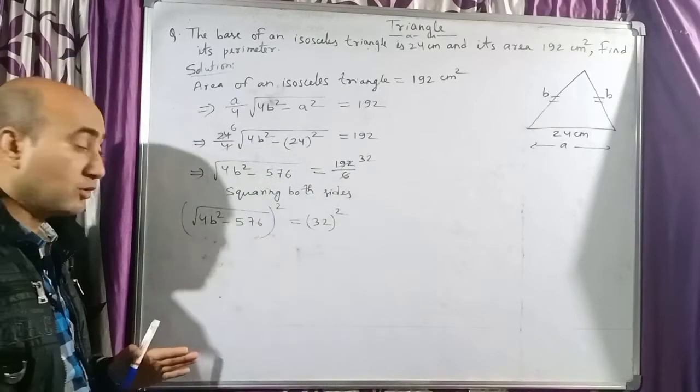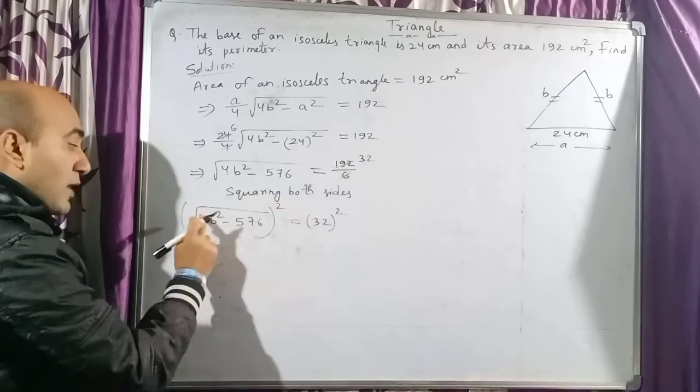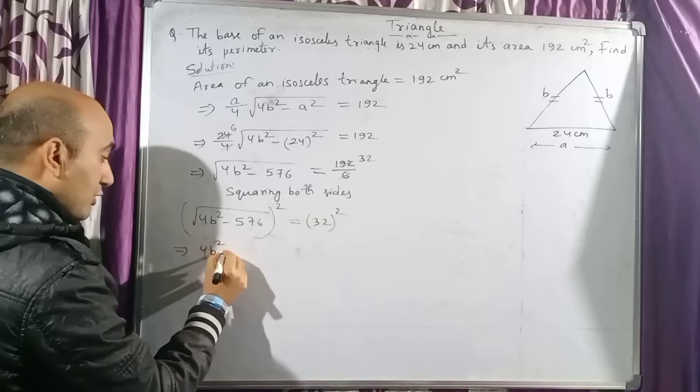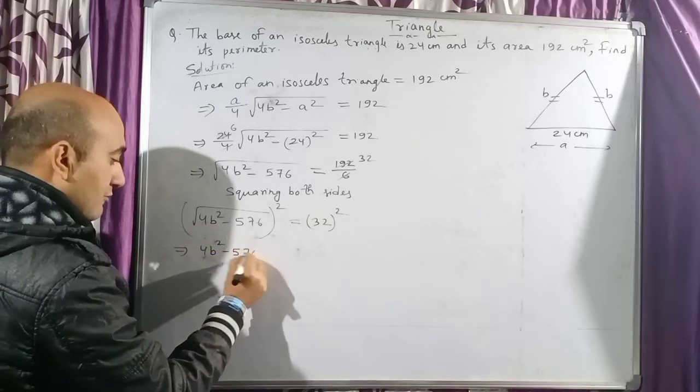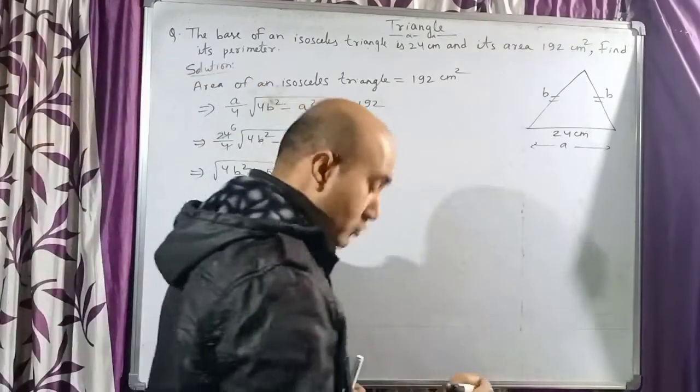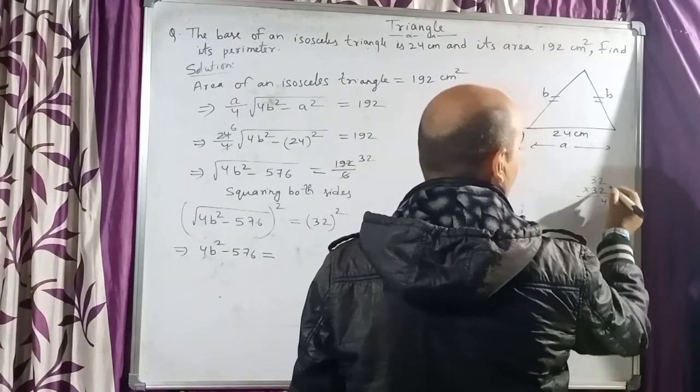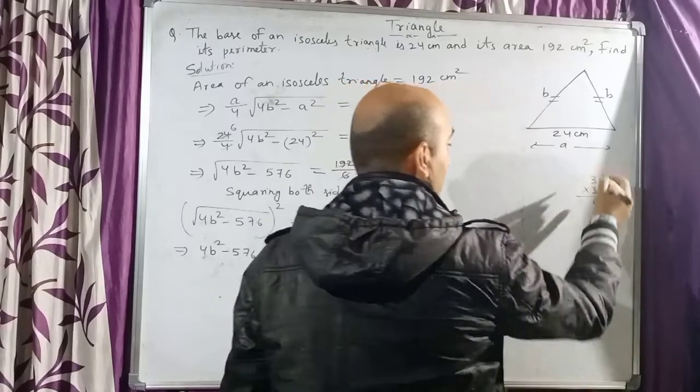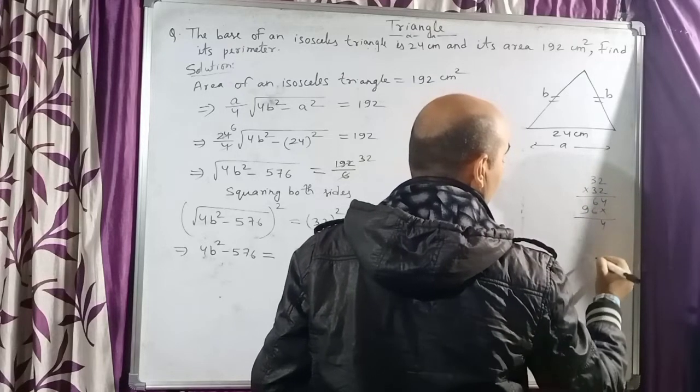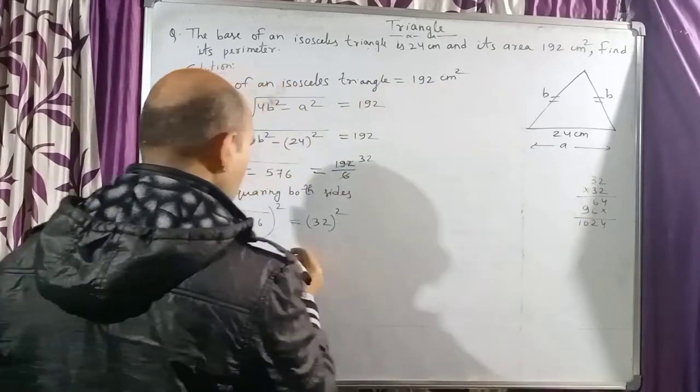Now children, just now I told you this intention of squaring both sides was to remove root over. So this square and root over will vanish. Only the internal number will remain, and the internal number is 4b² - 576 = 32². Let's check the result: 32 into 32. 2×2 is 4, 2×3 is 6, cross, 3×2 is 6, 3×3 is 9. Add it: 4, 6+6=12, 9+1=10. So 1024.